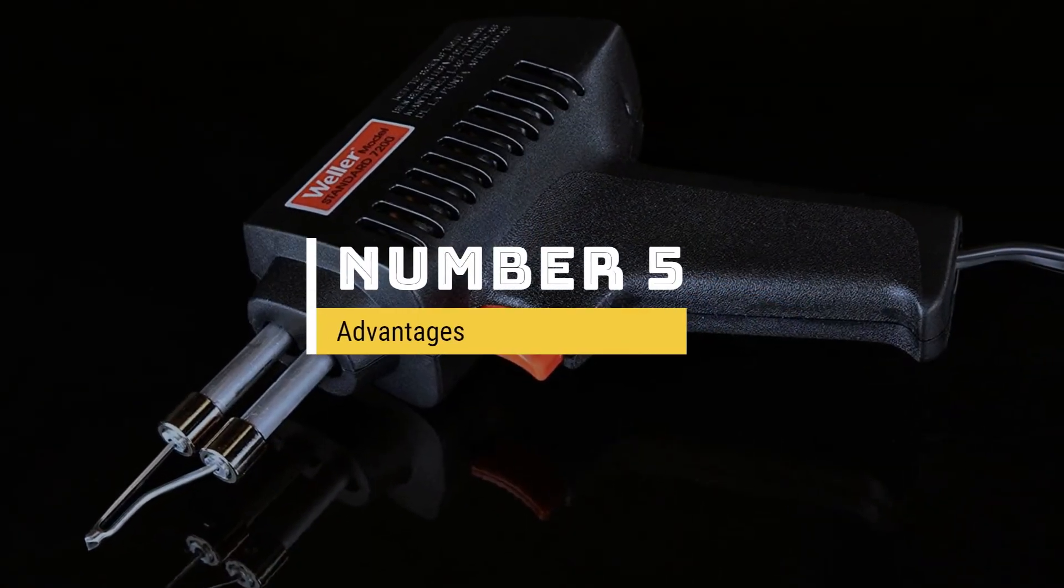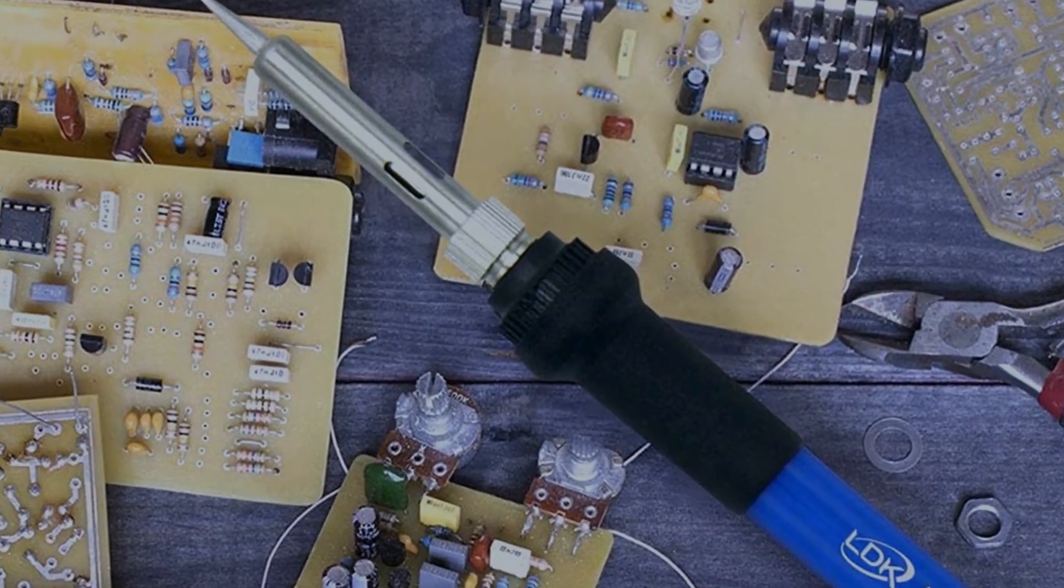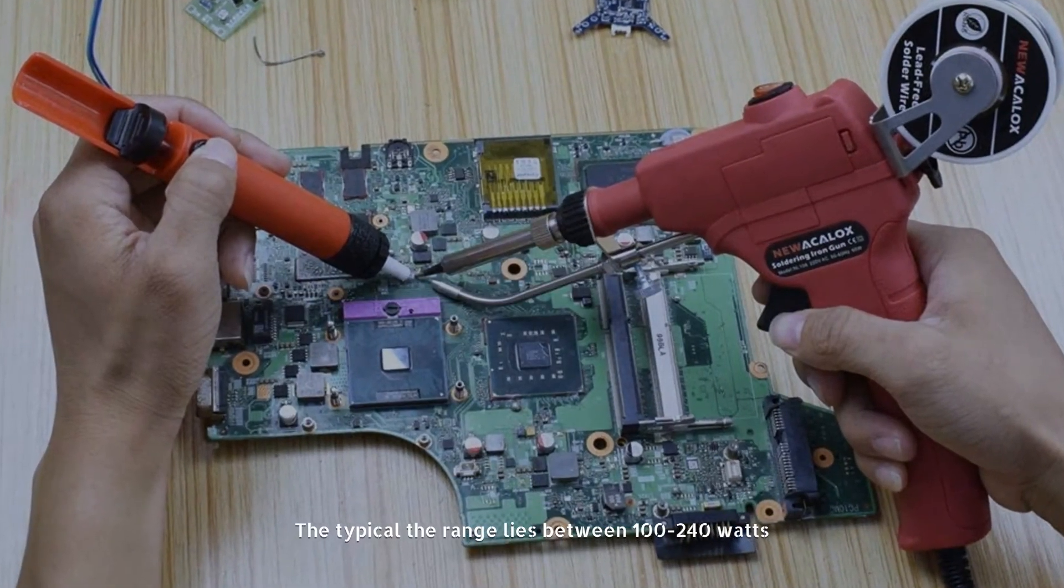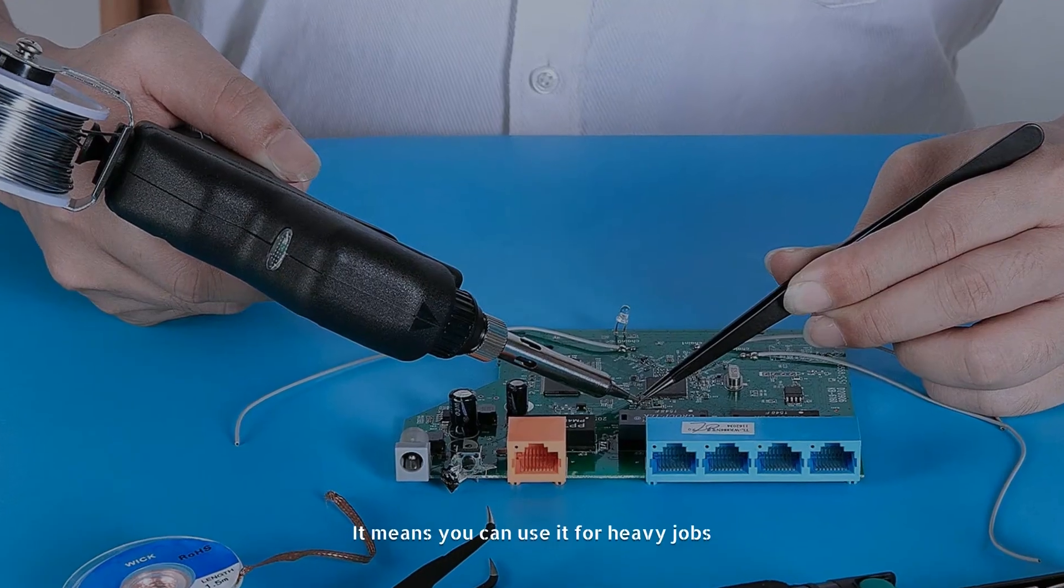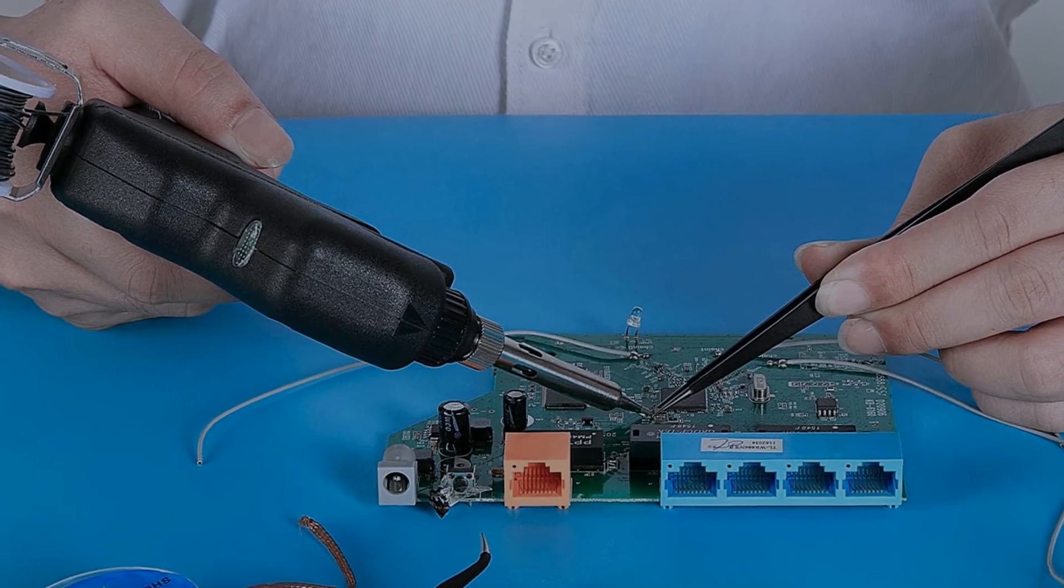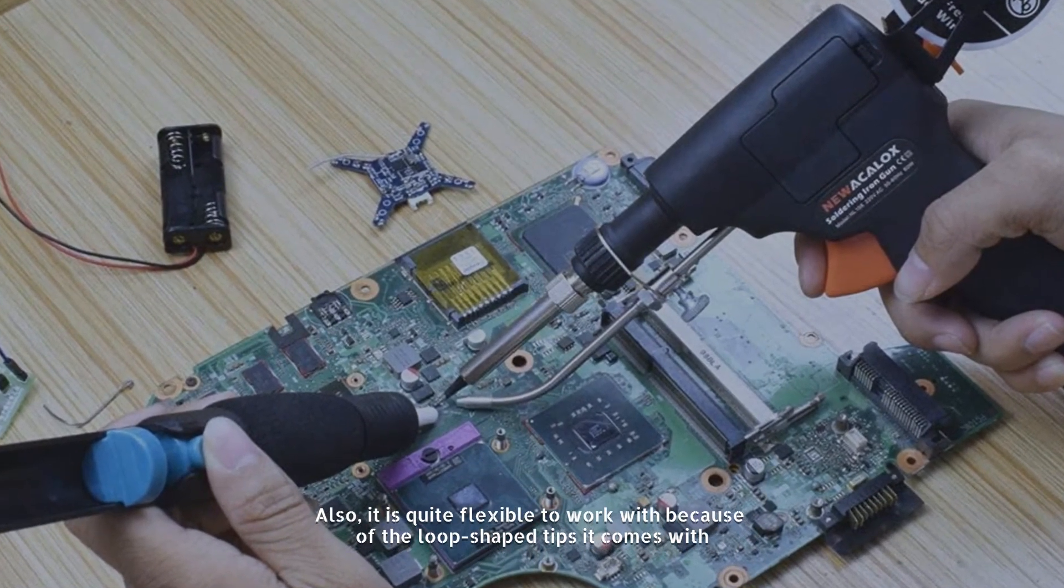Number five: Advantages. Soldering guns come with higher wattage; the typical range lies between 100-240 watts, which means you can use it for heavy jobs. Also, it is quite flexible to work with because of the loop-shaped tips, which help in working in narrow spaces.